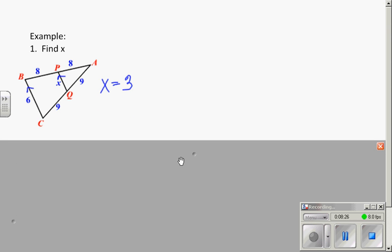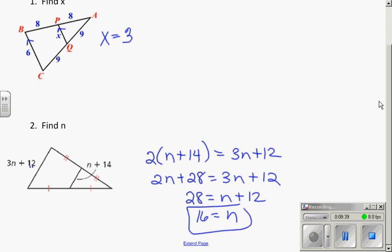So, some examples with mid-segments. If BC is 6, and it's obviously at the mid-segment, then that means that PQ is half of 6 or 3. Pretty simple.